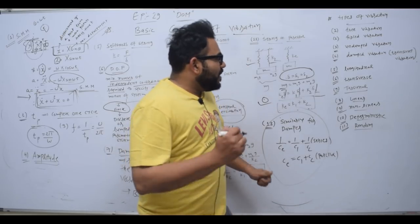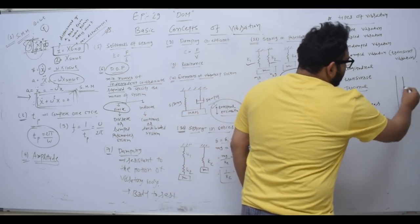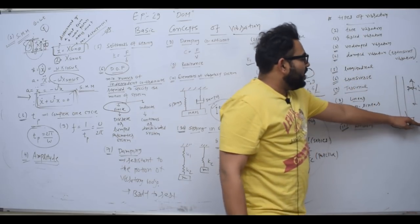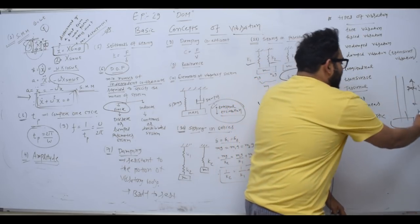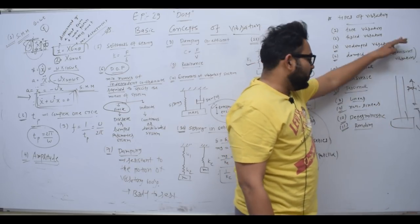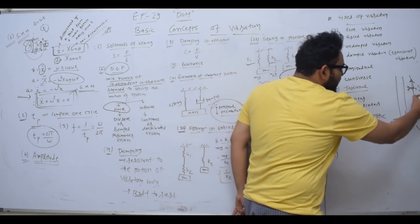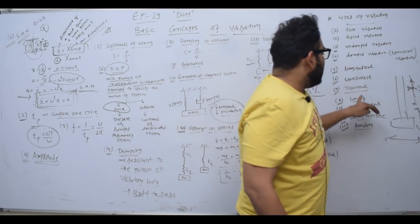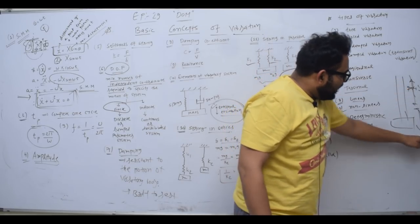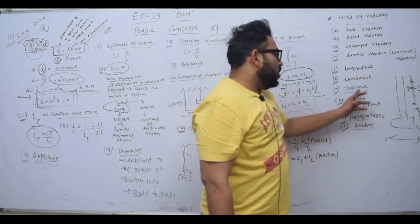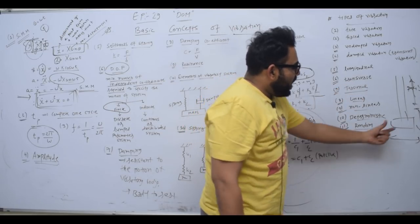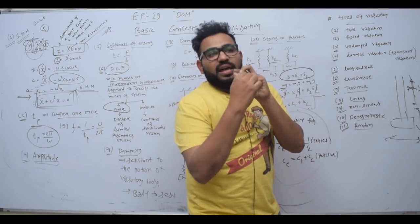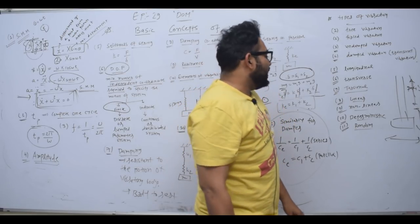Longitudinal vibration: if there is a shaft with a disc, and the shaft moves up and down along its axis, the vibration produced is called longitudinal vibration. Transverse vibration: the axis of the system is here, but the motion is in the perpendicular direction — that is called transverse vibration. Torsional vibration: the disc placed on the shaft moves around the axis, producing a twisting and untwisting moment, which generates torsional vibration.